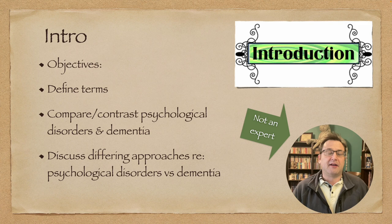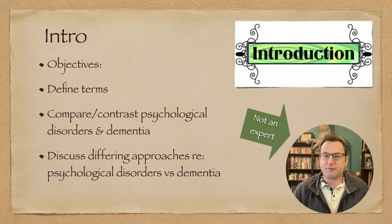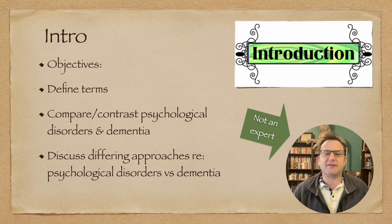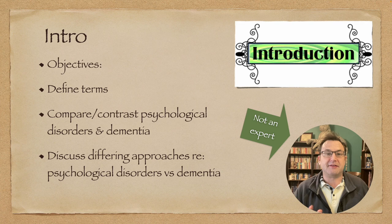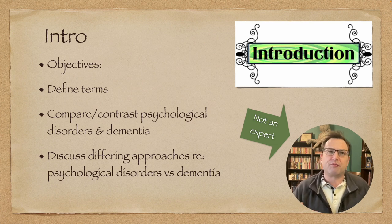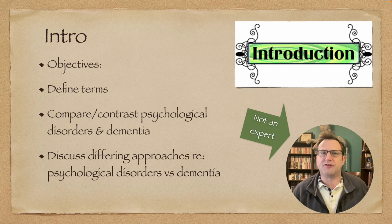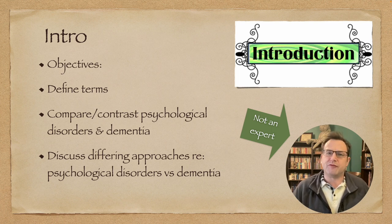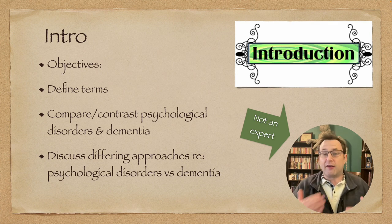With those disclaimers out of the way, what we're going to do is define some terms we'll be using throughout the unit. We're going to compare and contrast psychological disorders and dementia in very broad strokes — these are huge fields and we don't have time for detail. We're also going to briefly highlight the differences between approaches for dementia and psychological disorders, and we'll go into more detail as we get to each one.